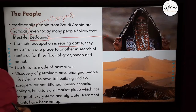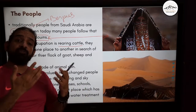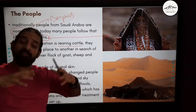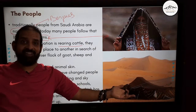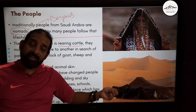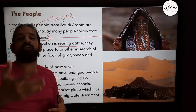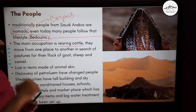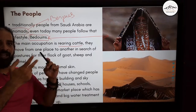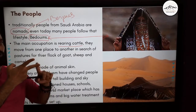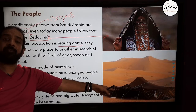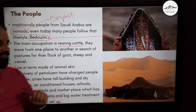They also have water plants to convert ocean water into fresh water — this is how rich they have become. Most people are now moving to cities. So to summarize the people of Saudi Arabia: the Abaya, the Thob, the Bedouins, and tents made of animal skin.